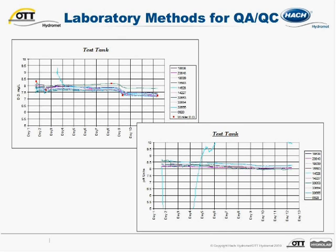In the lower right hand section are pH data from the same lab tank test. Wild fluctuations in this parameter may be an indication of poor maintenance or sensor malfunction.